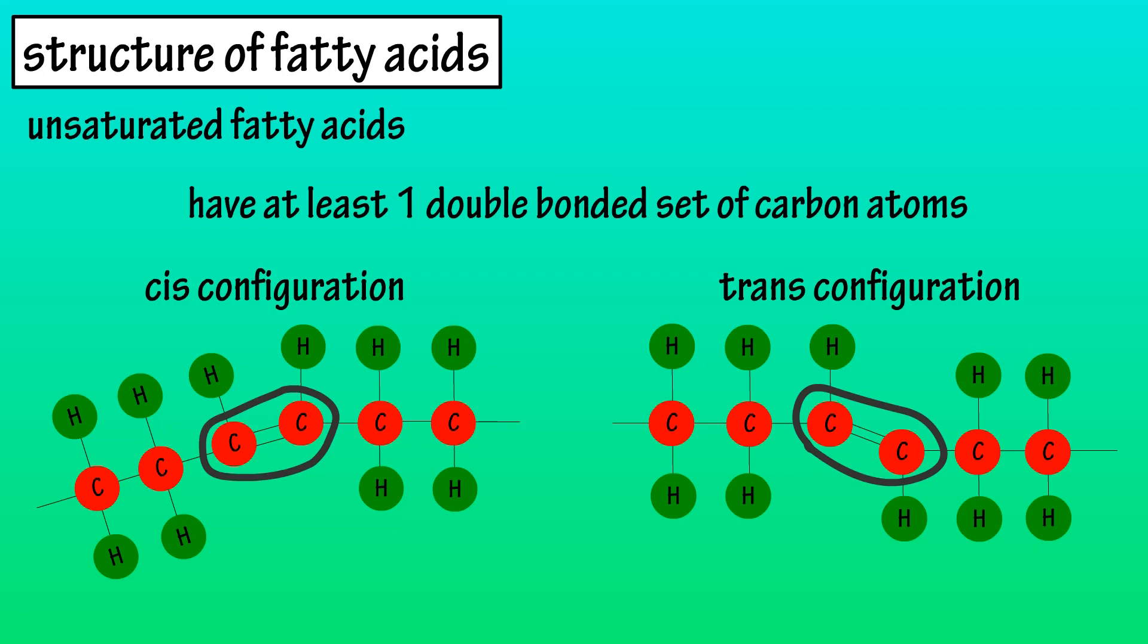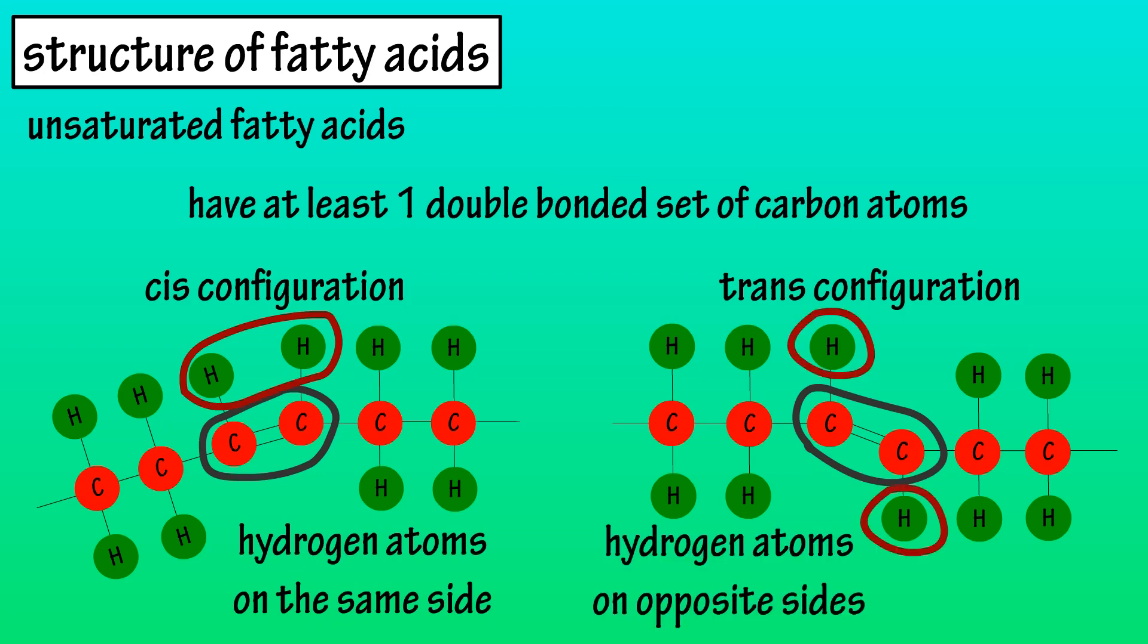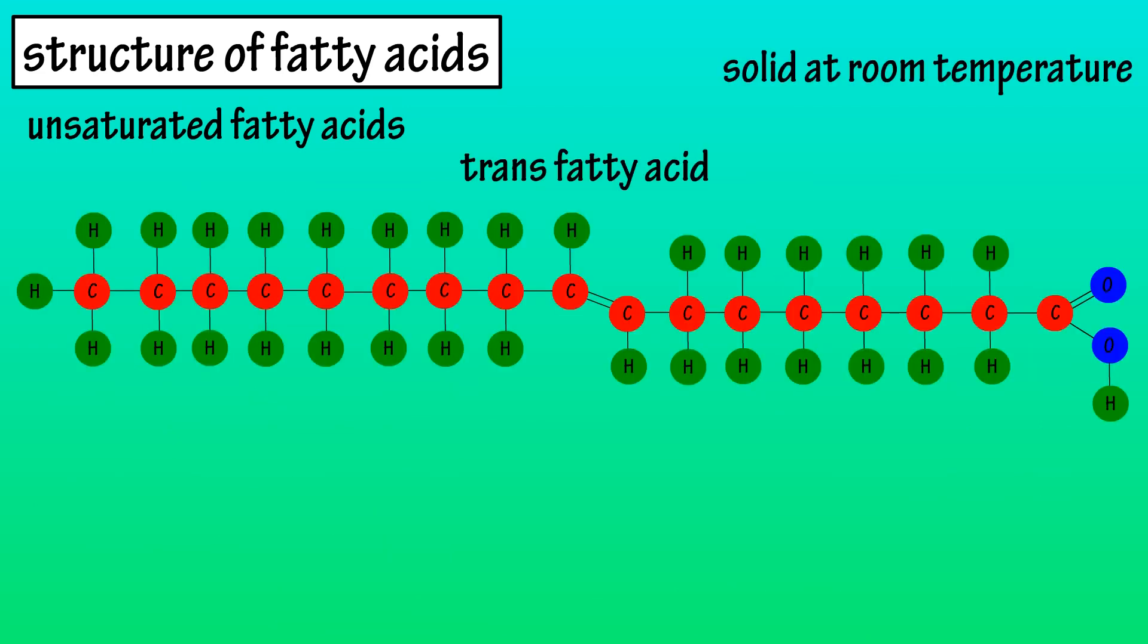In the cis formation, the hydrogen atoms are on the same side of the double bonded carbon atoms, and in the trans formation, the hydrogen atoms are on opposite sides. Trans fats are solid at room temperature and usually have a high melting point.